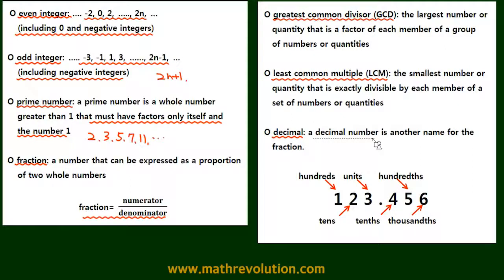A decimal is a number, is another name for a fraction. And it's normally expressed as below. So this is the hundredth digit, units digit, and hundredth digit. And here we have the tens digit, the tenth digit, and the thousandth digit.